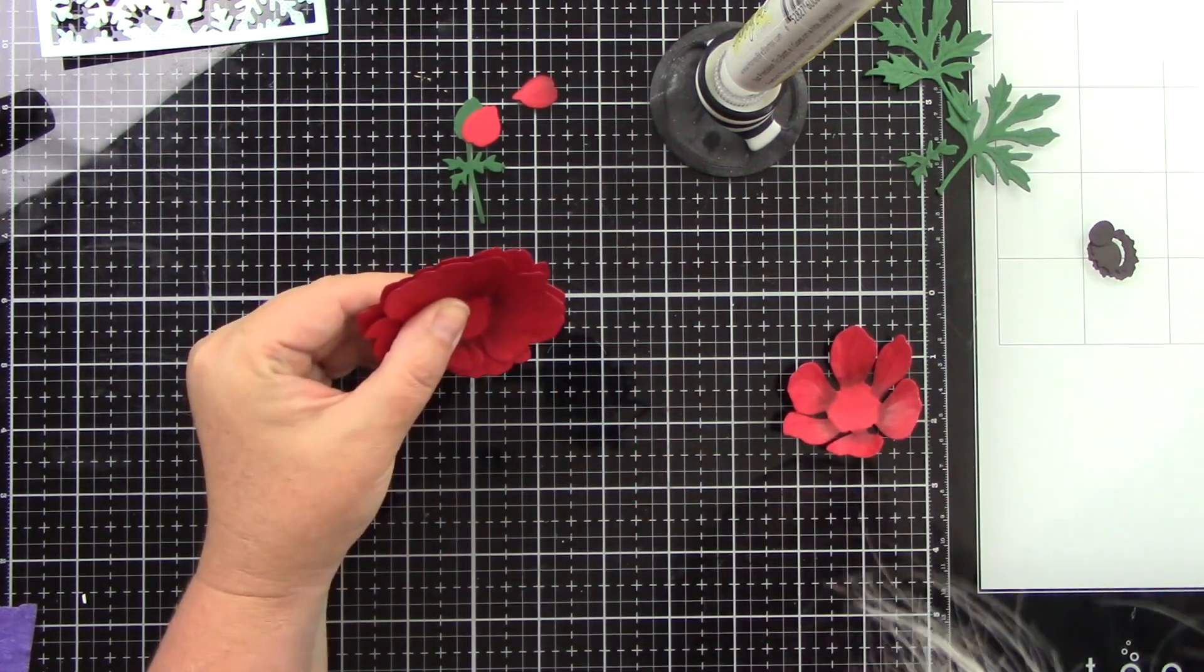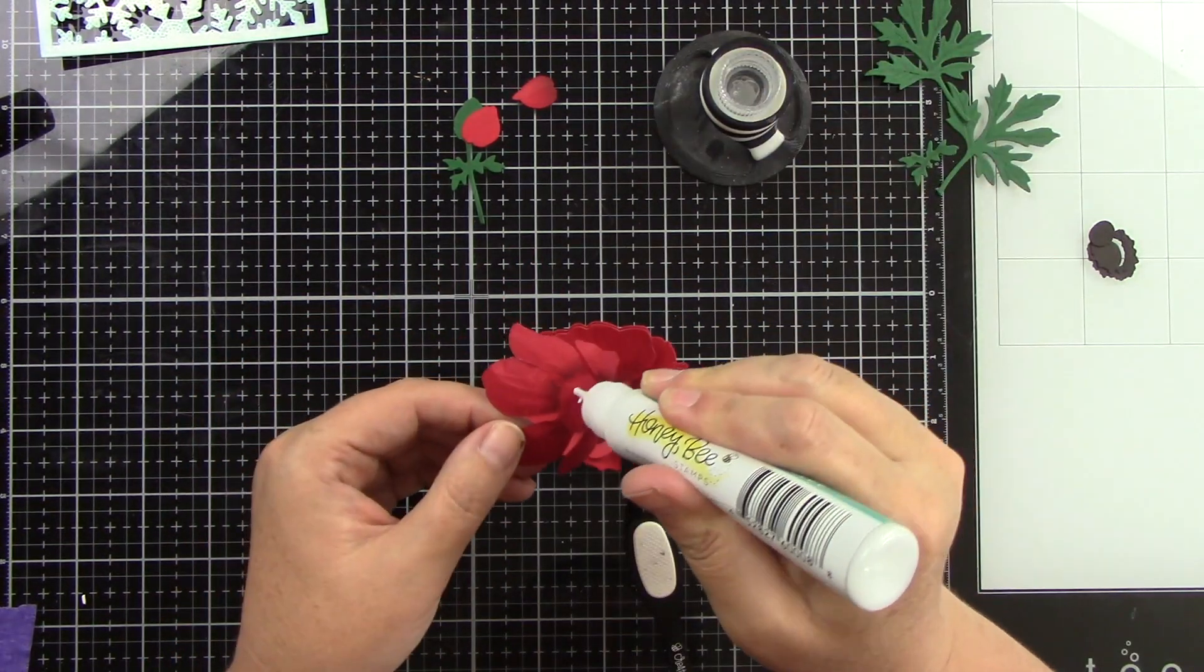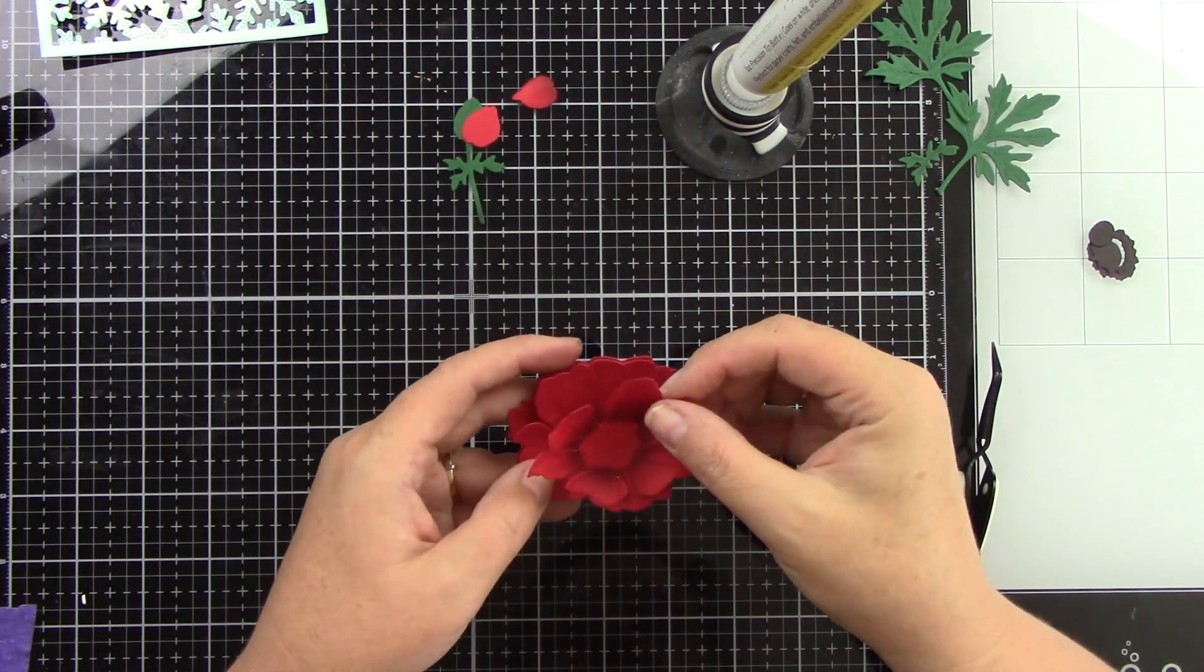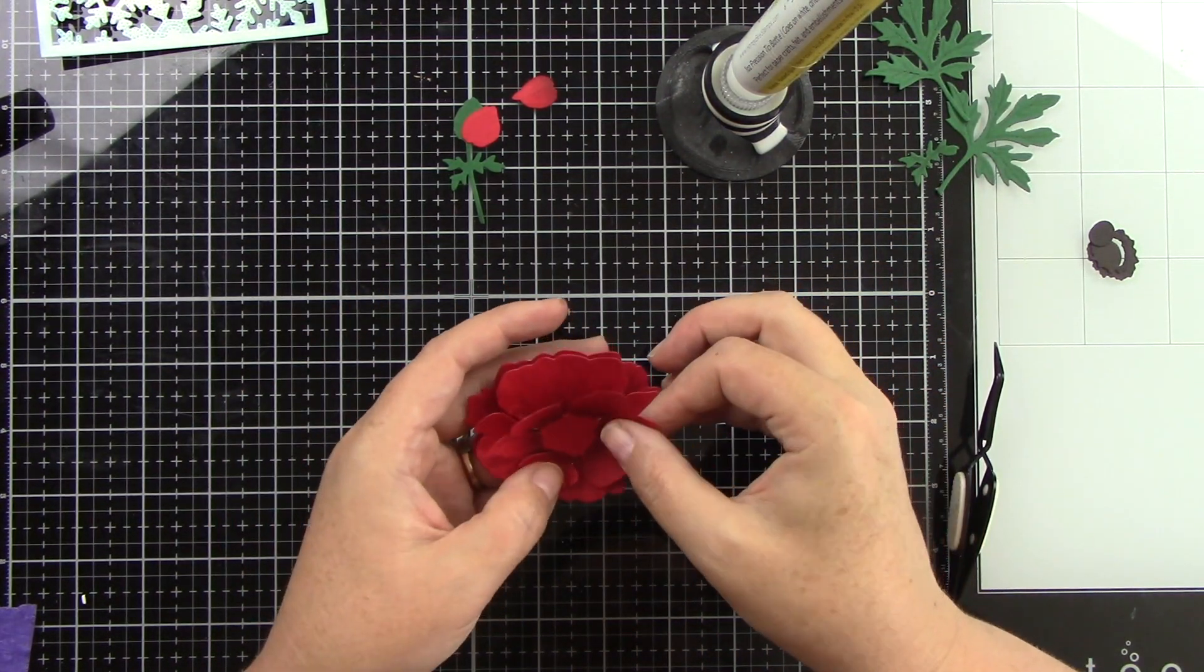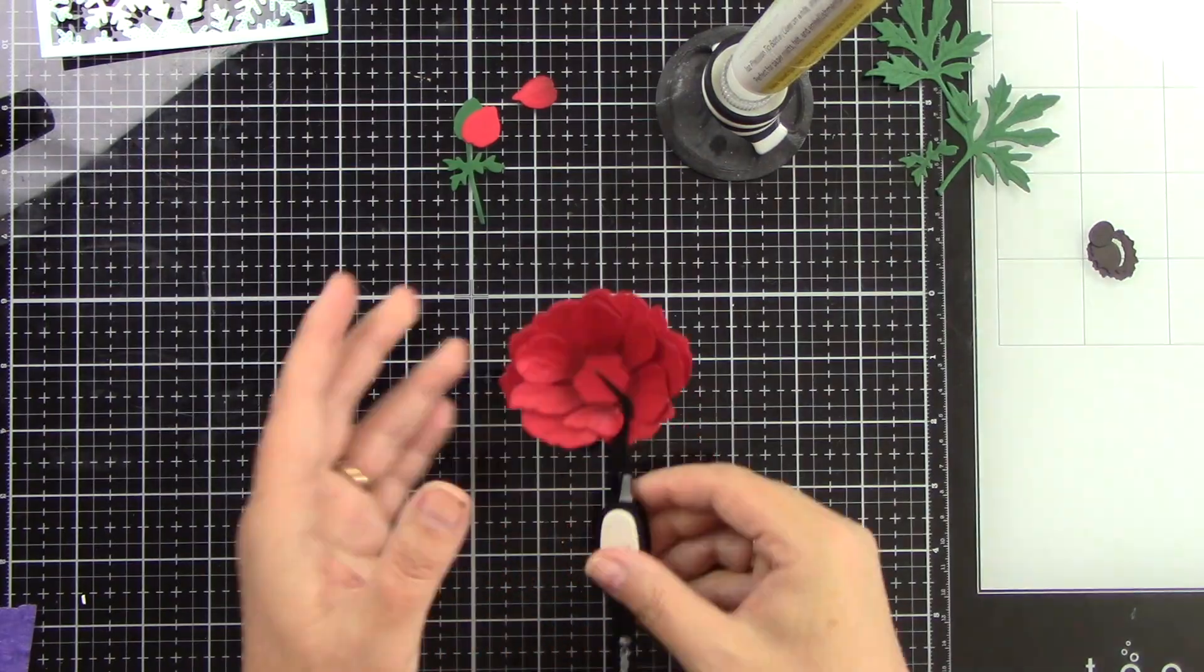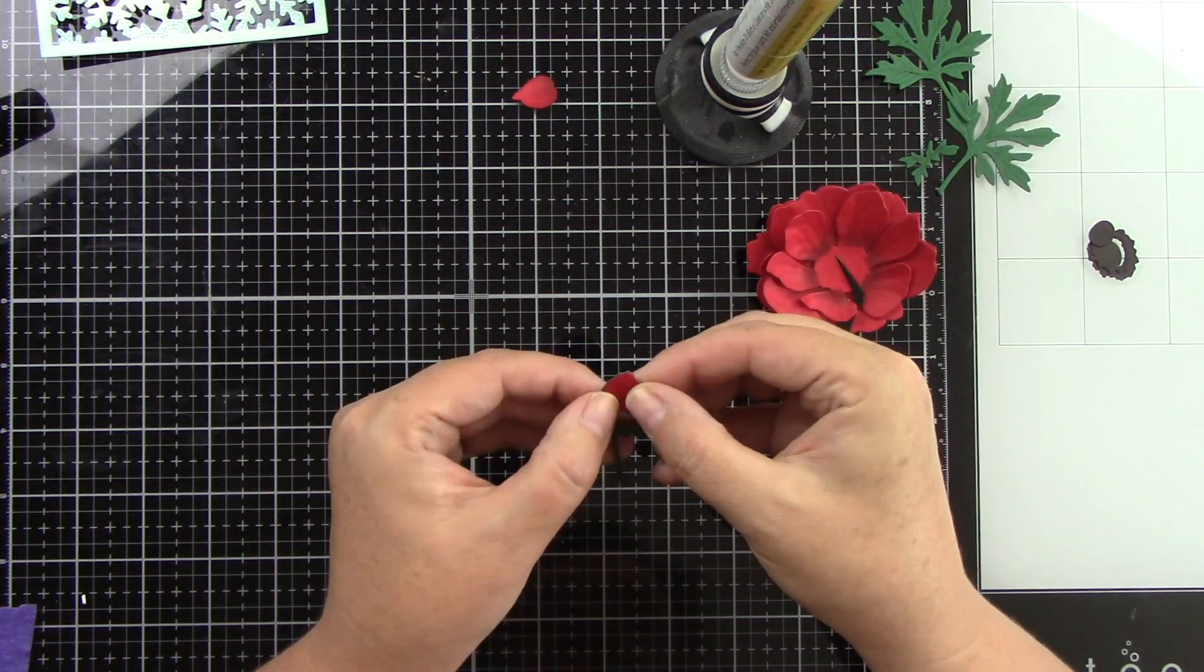So I'm going to add some glue to the centers and the way that these line up is really super simple. There's a petal on each one of the layers that lines up with the one below, so that makes it super simple to adhere together.